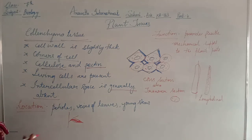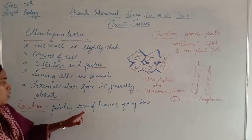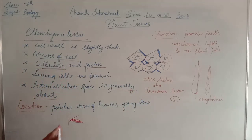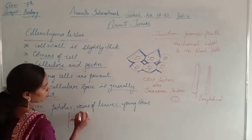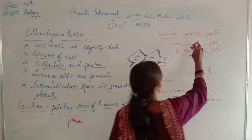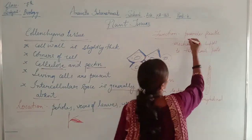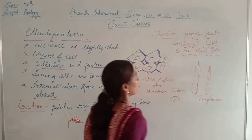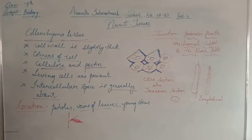Collenchyma tissues are found in petioles, veins of leaves, and young stems. The function is to provide flexible mechanical support to the plant parts.